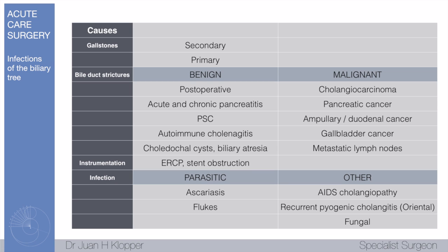Instrumentation is another cause — any patient who has had cannulation of the biliary tree via ERCP, placement of a stent, or obstruction of that stent. Any exogenous material or procedure done on the biliary tree can cause cholangitis. Infections including parasitic infections are well described in certain parts of the world. We also see AIDS cholangiopathy, oriental or recurrent pyogenic cholangitis, and various fungal infections. Most commonly though you are going to see stones and malignancies.